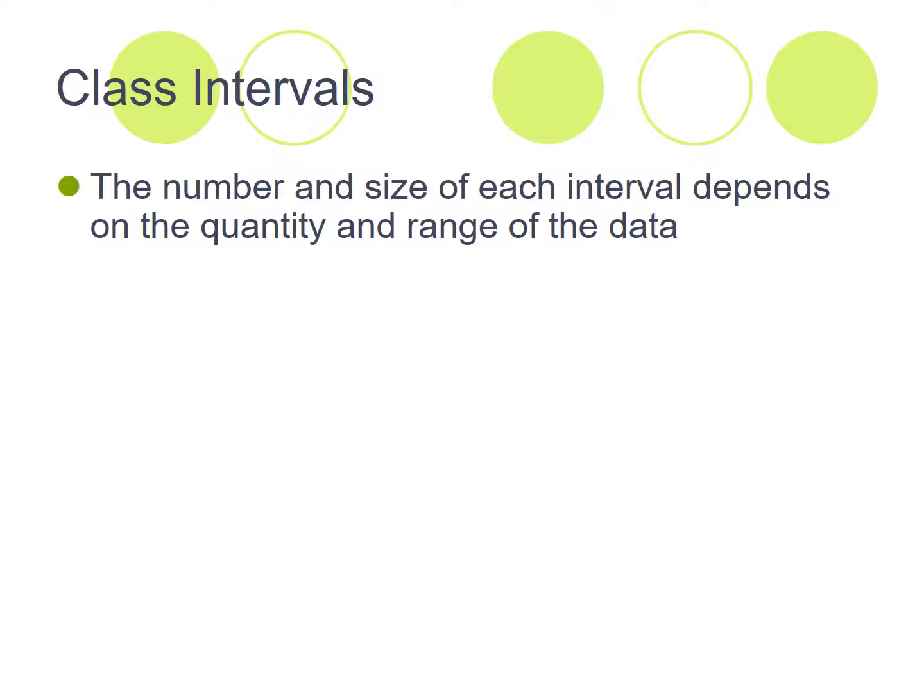So class intervals, the number and size of each interval depends on the quantity and range of the data. Generally, and as far as this course is concerned, we want to have between 8 and 15 intervals or 8 and 15 lines in the table.